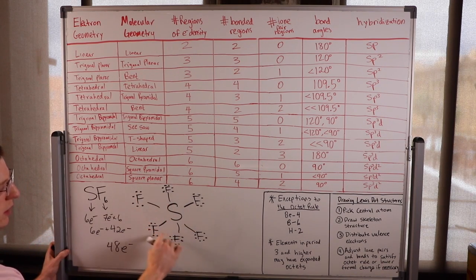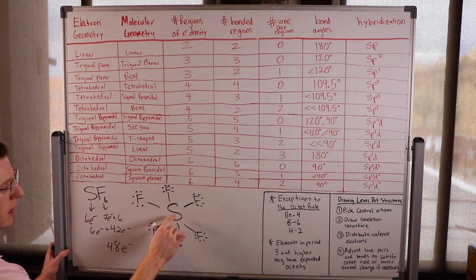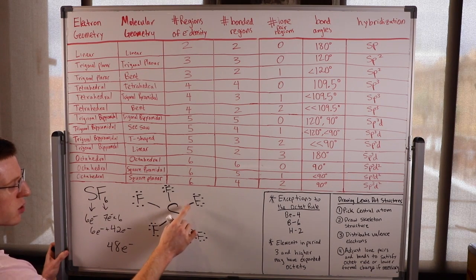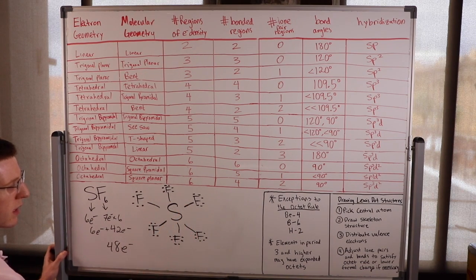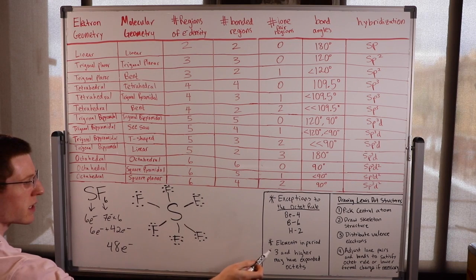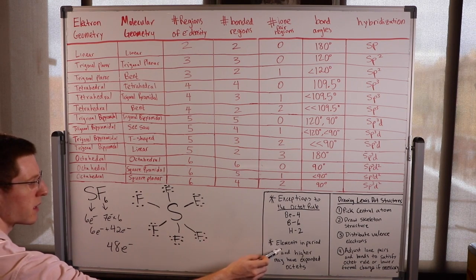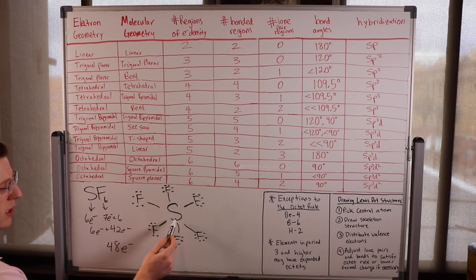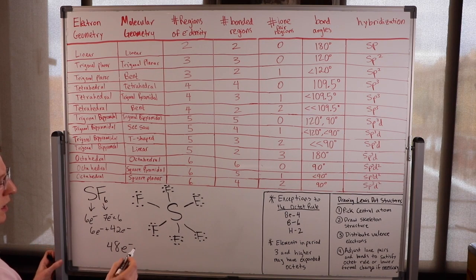The fluorines are all happy. The sulfur though has 12 electrons — a pretty expanded octet. But luckily it's an exception: sulfur is in period 3 or higher, so it can have an expanded octet.